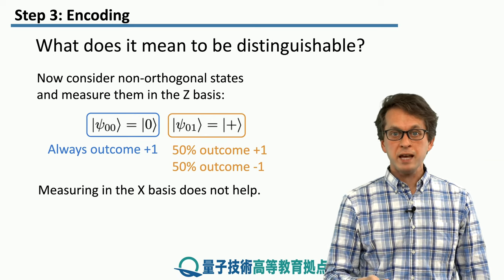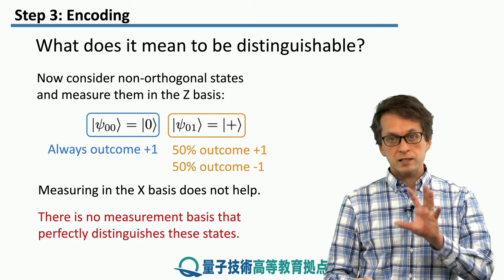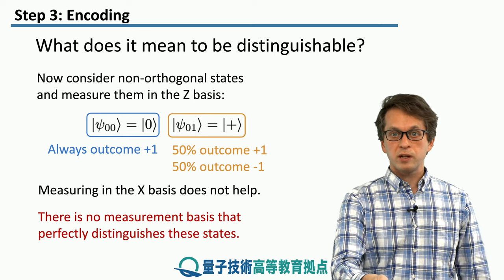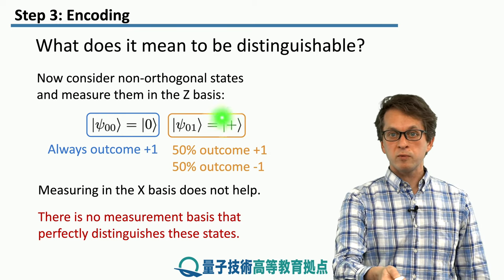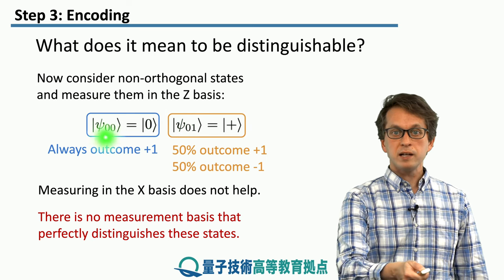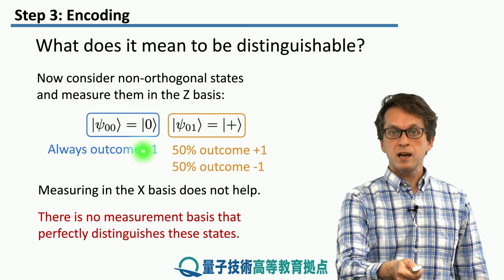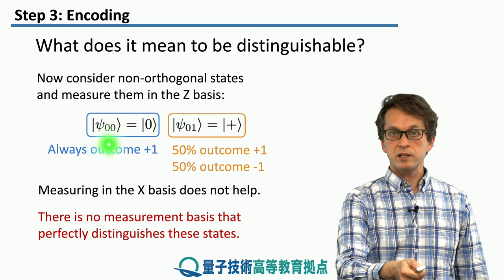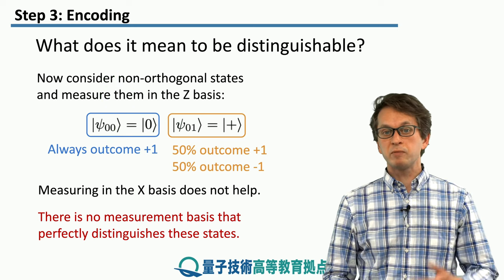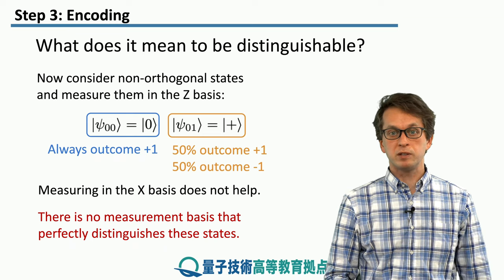We can do the same thing in the X basis, where the scenario is reversed. We can say with certainty that |+⟩ gives +1 in X, but if we measure |0⟩ in the X basis, sometimes we get +1 and sometimes −1.